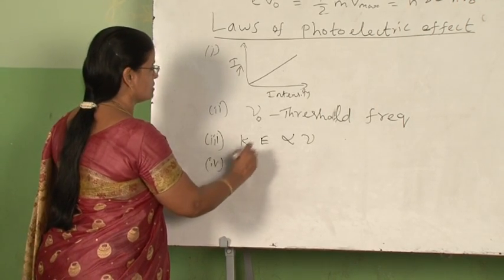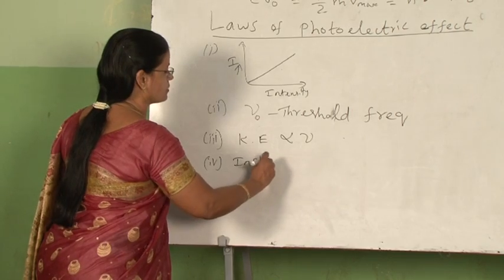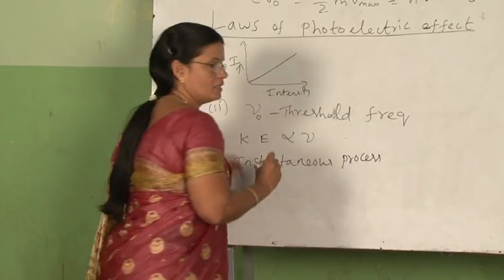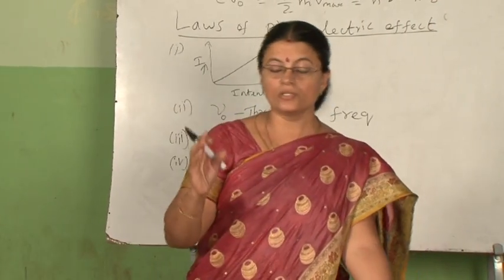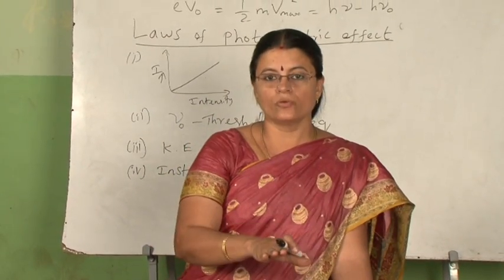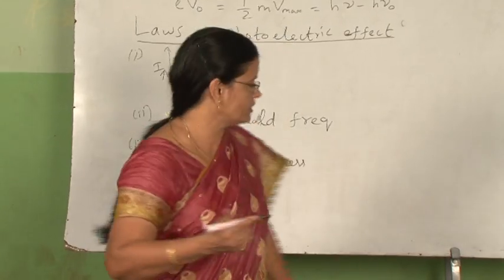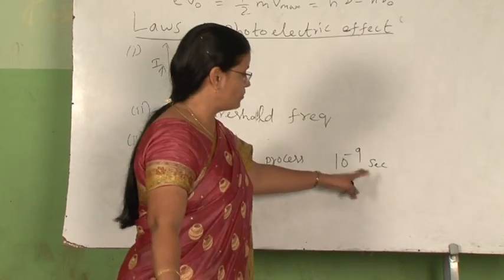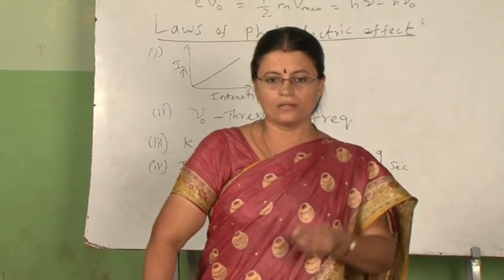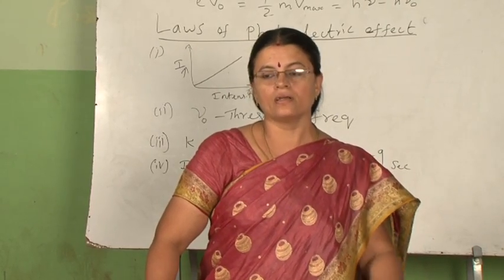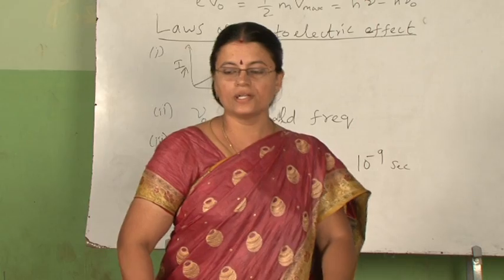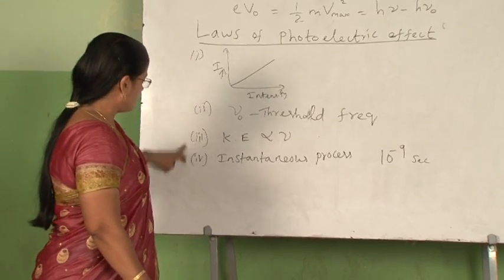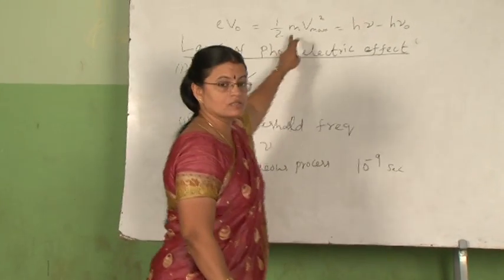The fourth law states that the photoelectric effect is an instantaneous process — a very quick process. There is no time lag between the incidence of photons and the emission of photoelectrons. It is calculated experimentally that the time lag is just 10⁻⁹ seconds, which is a very, very small quantity. So almost at once, electrons are emitted as soon as the photons are incident on the metal surface. These are the four laws of photoelectric effect, and we can explain all four based on Einstein's photoelectric equation.